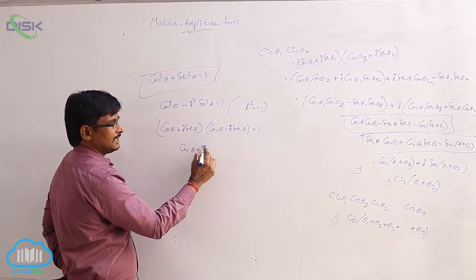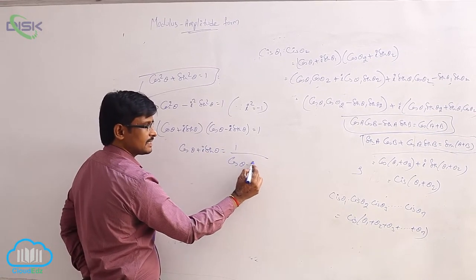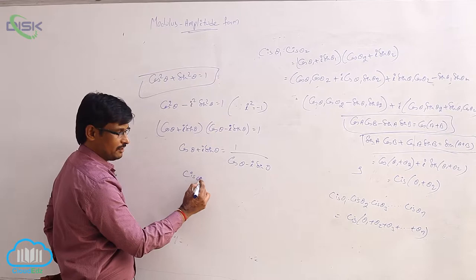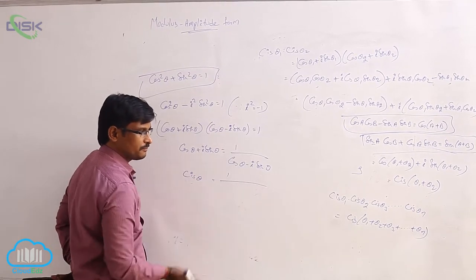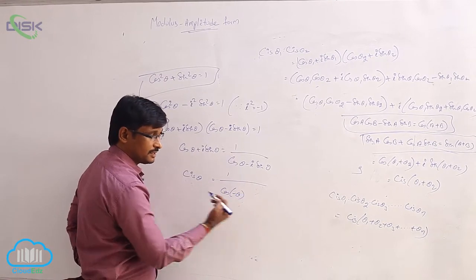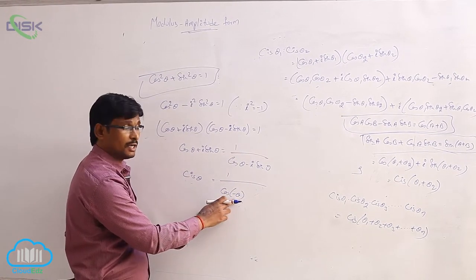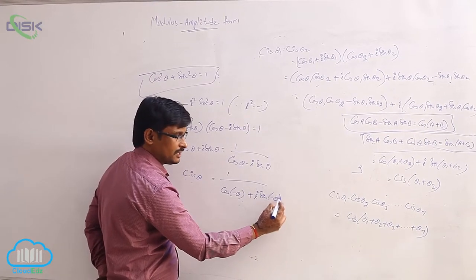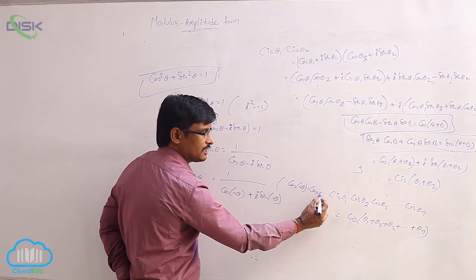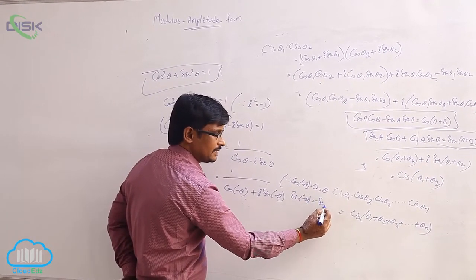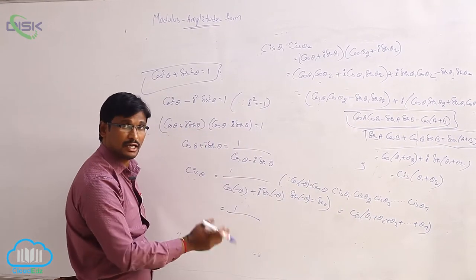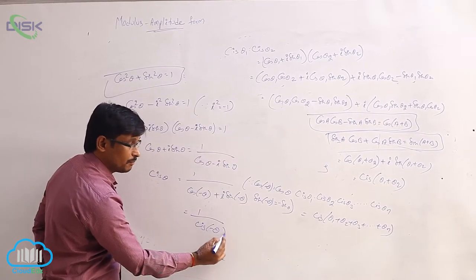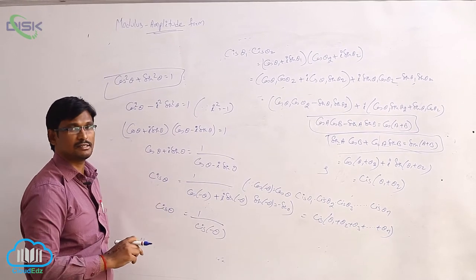So, cosθ + isinθ = 1 / (cosθ - isinθ). The notation for cosθ + isinθ is cis θ, equal to 1 divided by (cosθ - isinθ). In trigonometry, we know cos(-θ) = cosθ and sin(-θ) = -sinθ, so we can write cosθ - isinθ as cos(-θ) + isin(-θ), which is cis(-θ). Therefore, cis θ = 1 / cis(-θ).